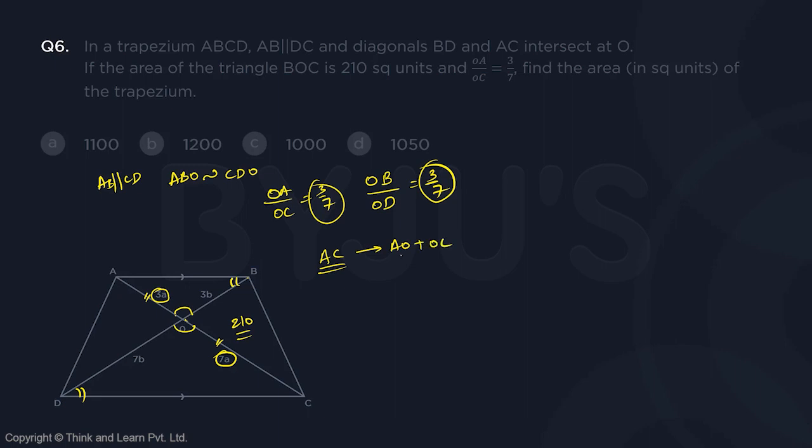Now, this AC is AO plus OC, correct? Now, on AO, you have, consider AO as the base. So you have the triangle AOB. Consider OC as the base. You have the triangle OCB, correct?